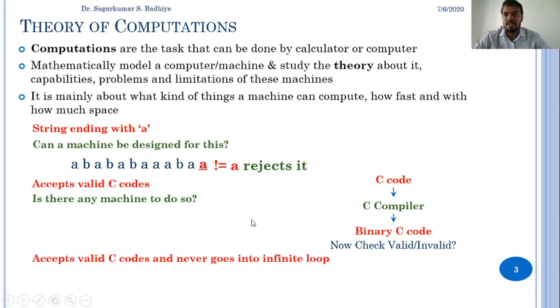Now, consider another example to design a system or a machine that accepts valid C code and never goes into infinite loop. We can design to accept valid C code, but we are not sure whether the code will go on executing till infinity or not. This problem cannot be solved or this is non-solvable problem.